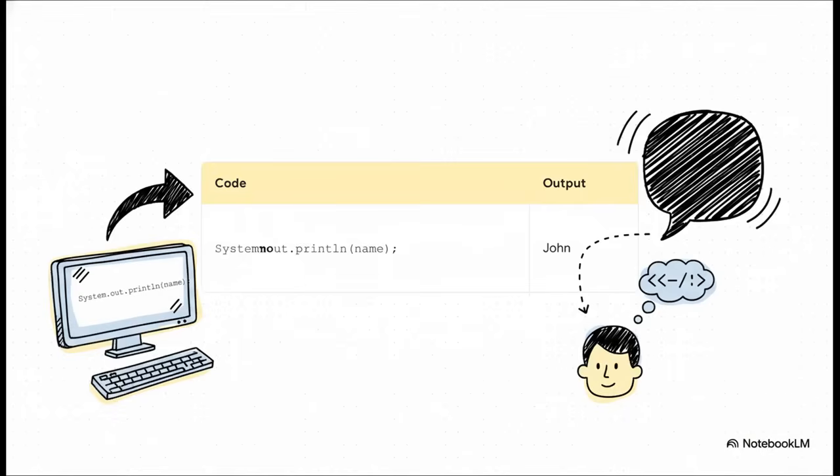This here shows you just how direct it is. That command, system.out.println, is basically you telling the computer, hey, whatever I put in these parentheses, just print it to the screen. So we give it our name variable, and bam, John shows up in the output. It's that simple.